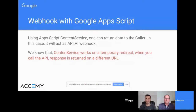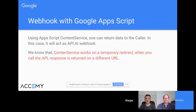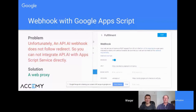Using Apps Script's content service, we can turn the Apps Script web app into a web service. When someone calls this web service, it returns data to the caller. The content service works on a temporary redirect — whenever you request data from the Apps Script web service, it automatically redirects to a googleusercontent.com temporary URL, which is different from the API URL. The problem is that API.ai webhook does not follow the redirect, so you cannot integrate API.ai with the Apps Script service directly.